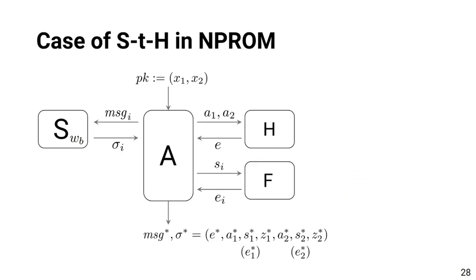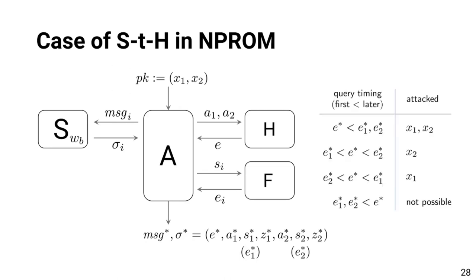In the case of shared and hash, we have another hash oracle here. Then, by observing the order of queries and answers from these hash oracles, one can see which instance is being attacked. For example, look at this case where E star in the forged signature is returned from hash function H before E1 is returned from F. It means that A1 star is fixed before its challenge E1 star. Thus, Z1 is a real answer that can be obtained only by breaking the soundness of the underlying protocol on statement X1. This property helps to prove the unforgeability in the non-programmable random oracle model.